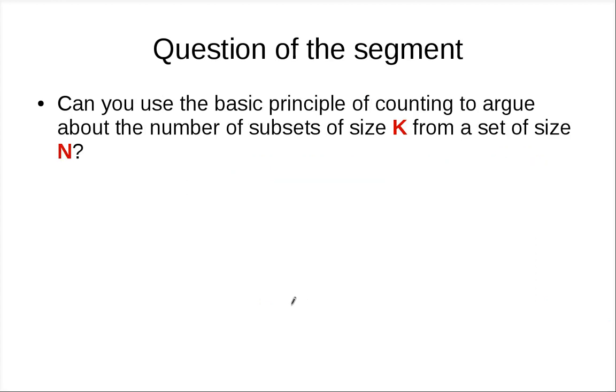All right, so the question of this segment is the following. We know that the number of subsets of size K is N choose K. The way we came up with that is to think about how we overcount something. But another way of thinking about this is to use the basic principle of counting. So my question is: can you design experiments so that by using the basic principles of counting, we can compute the formula for the number of subsets of size K?